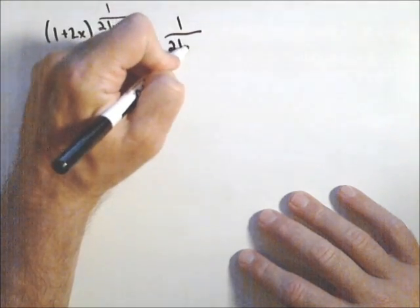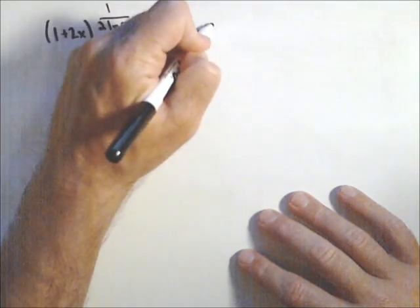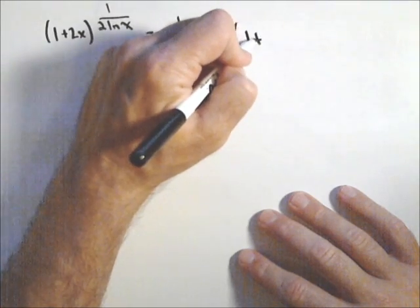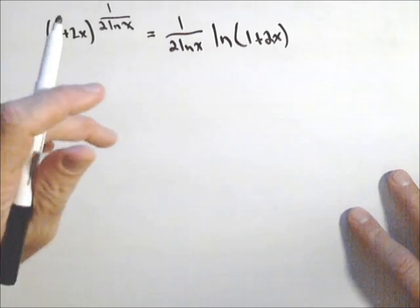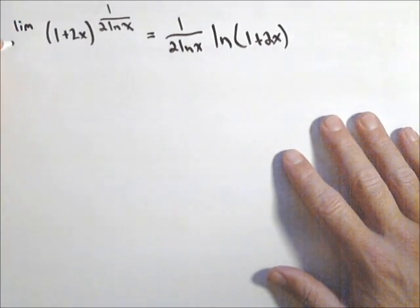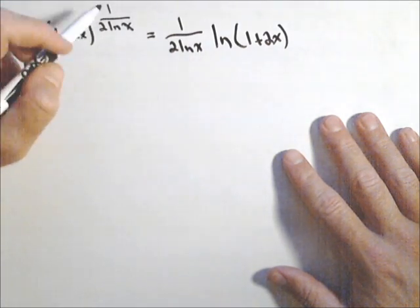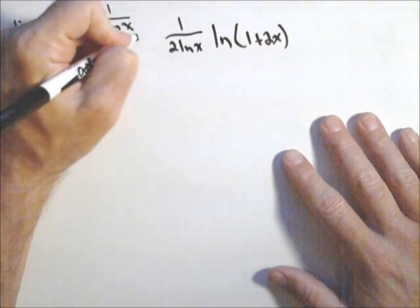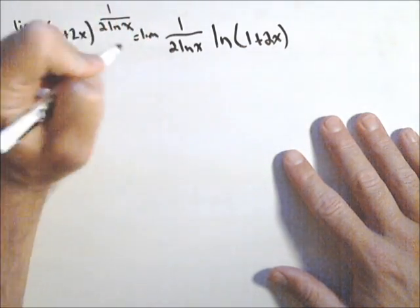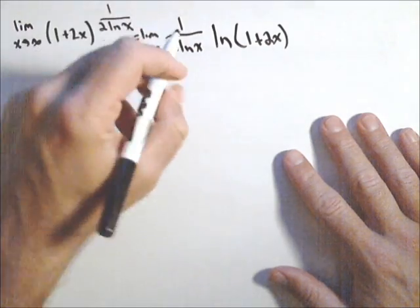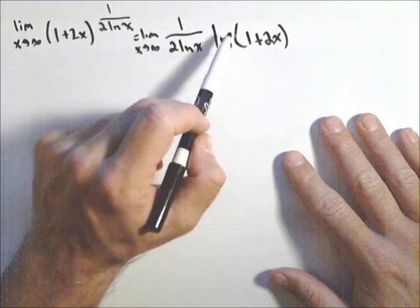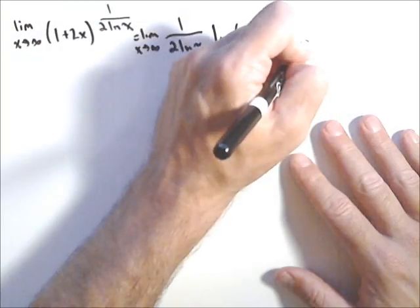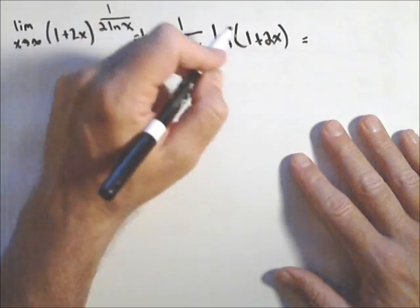So one over two ln of x ln of one plus two x. And we should probably make sure that what we have is L'Hopital's because we're actually gonna take a limit here as x goes to infinity. And so what I have is an infinity to the zero case. Now here's why that is an indeterminate form. If you look at what's gonna happen here, this guy's gonna go to infinity, this guy's gonna go to infinity, or well, zero right now. So right now it's a zero times infinity.